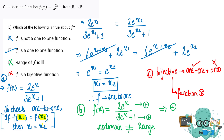But if x1 and x2, for which the value of y was coming out the same, turn out to be equal themselves, then we can conclude using the contradictory method that there is only one x for which there is one value of y. Therefore we will apply the if-and-then condition to check options A and B.